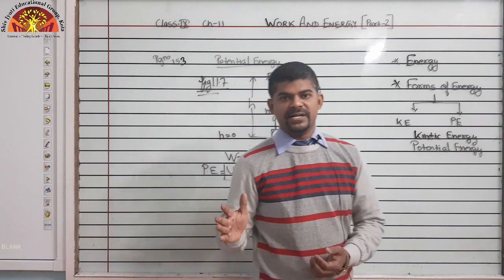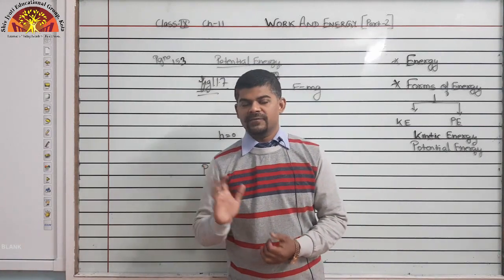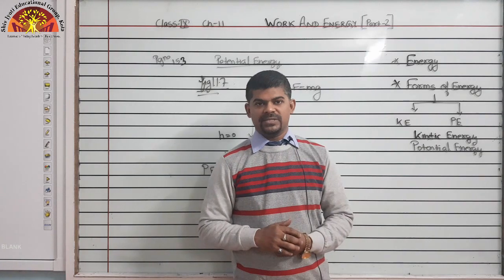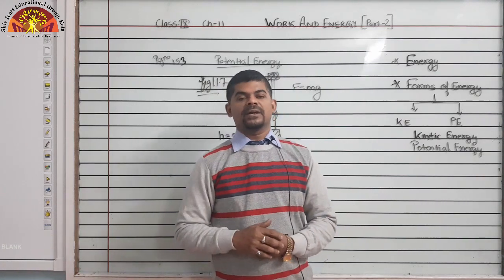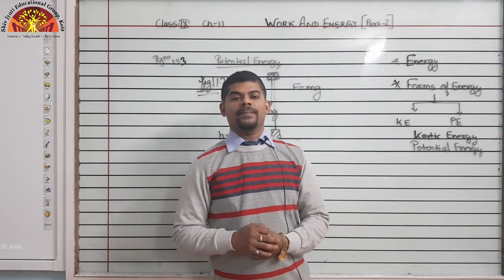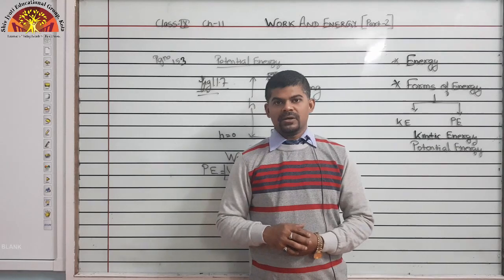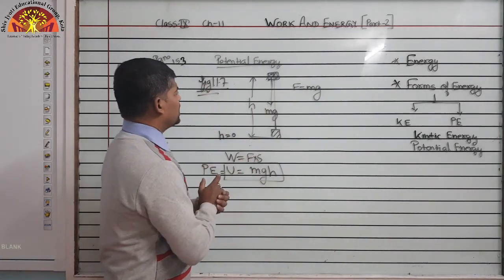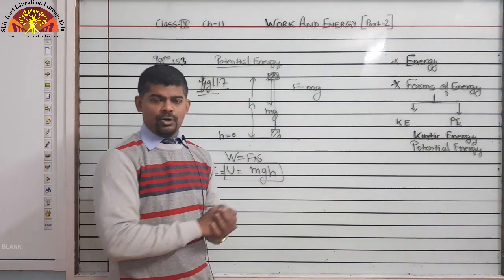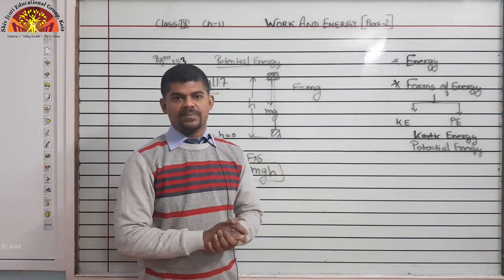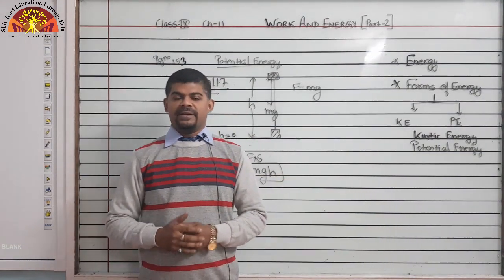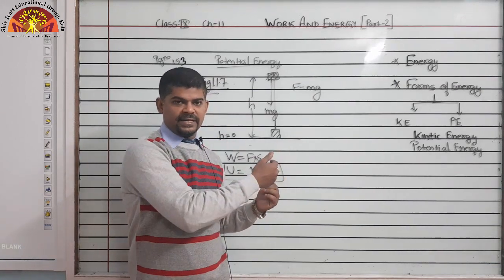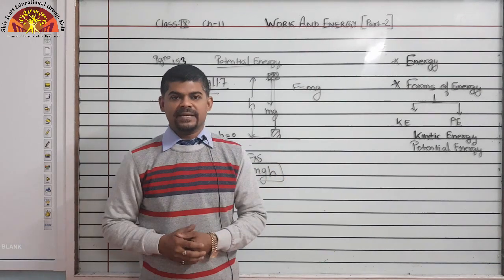So to calculate potential energy, you need height, mass, and acceleration due to gravity. To calculate kinetic energy, you need mass and velocity. I hope potential energy and kinetic energy are now clear to you, students. In the next part, we will discuss further topics. Till then, thank you.